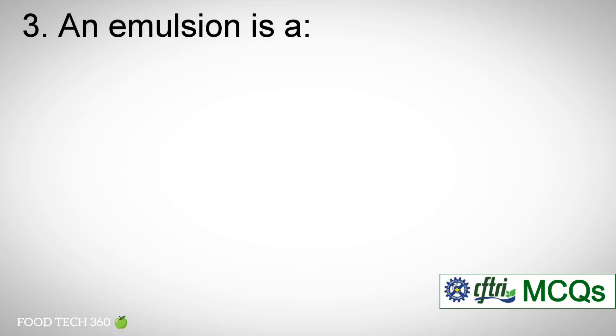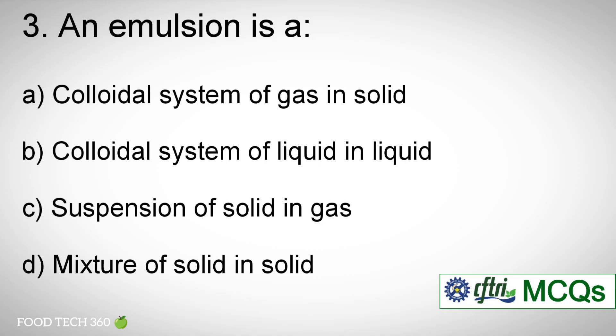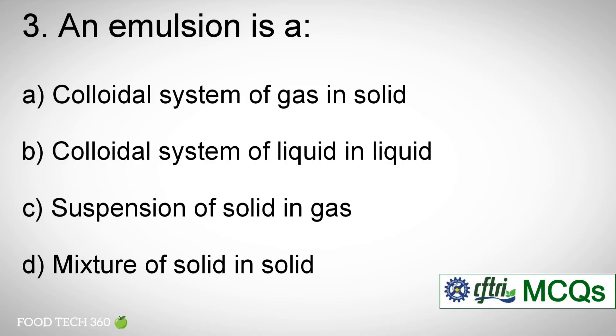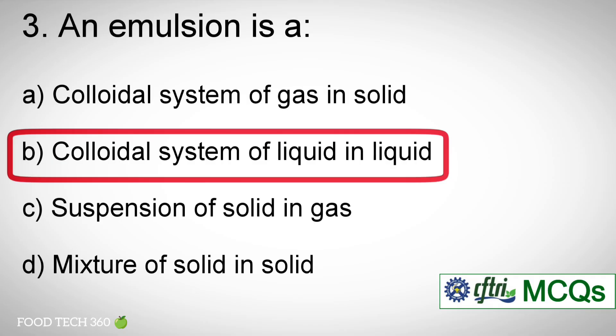Question number 3: An emulsion is — A. Colloidal system of gas in solid. B. Colloidal system of liquid in liquid. C. Suspension of solid in gas. D. Mixture of solid in solid. Correct answer: B — Colloidal system of liquid in liquid.